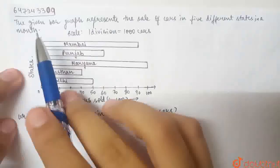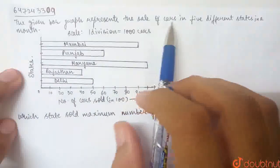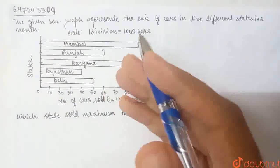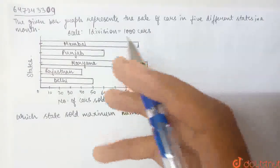This question is given. The given bar graph represents the sale of cars in 5 different states in a month. We have given how many cars sold in a month in 5 different states.